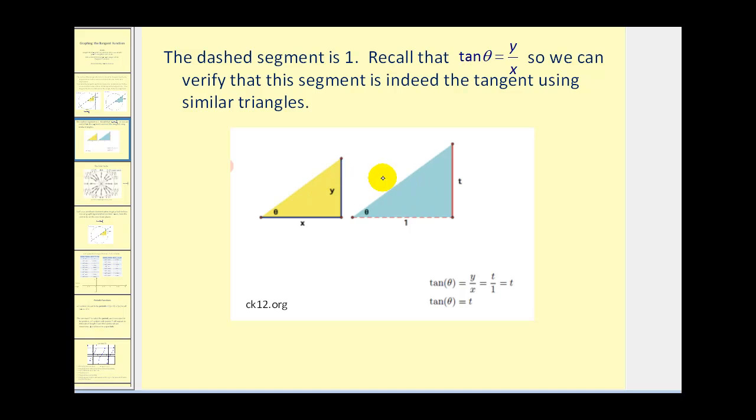What we have are two similar triangles where tangent theta equals y over x in the yellow triangle but it's also equal to t over one in the blue triangle. Since these two triangles are similar, this forms a proportion which means their cross products must be equal. We have y times one equals x times t, and if we solve this equation for t, this shows that the length of segment t equals the ratio of y over x.